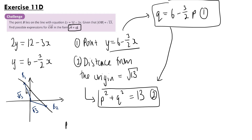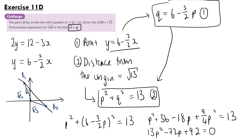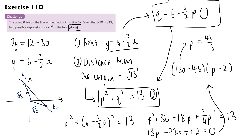Substituting the first equation into the second, we get p squared plus (6 minus three-halves p) squared equals 13. Expanding gives p squared plus 36 minus 18p plus nine-quarters p squared equals 13. Bringing all terms to the left-hand side and multiplying through by 4 gives 13p squared minus 72p plus 92 equals 0. Factorising gives (13p minus 46)(p minus 2) equals 0, so p equals 46 thirteenths or p equals 2.